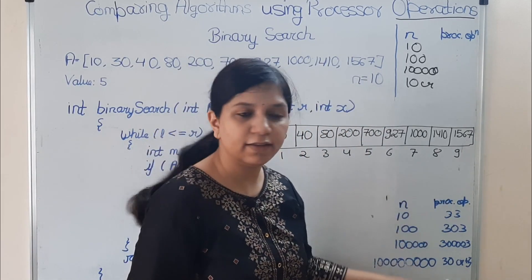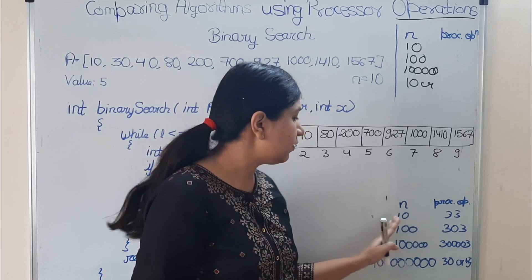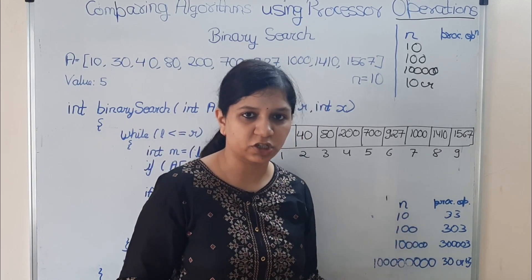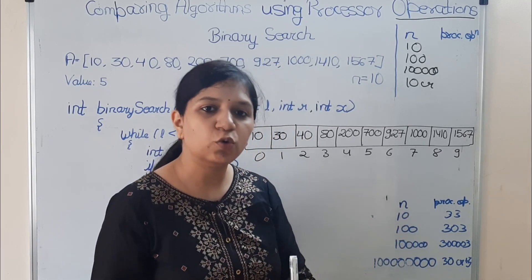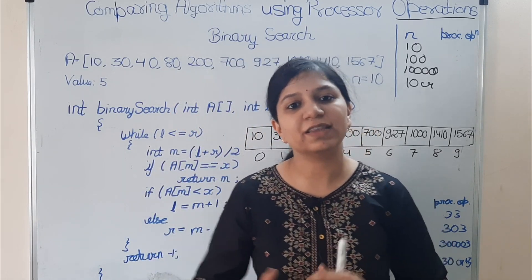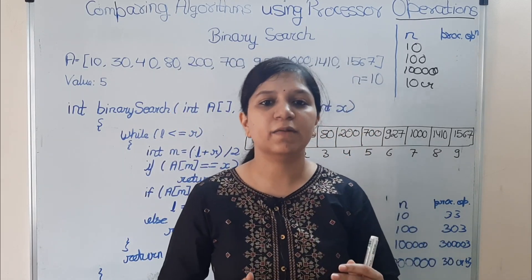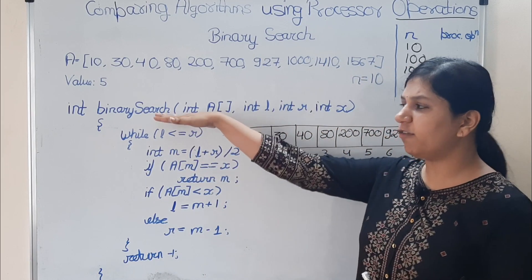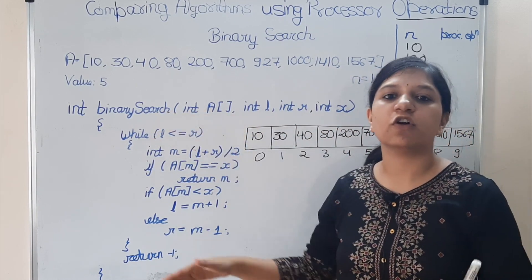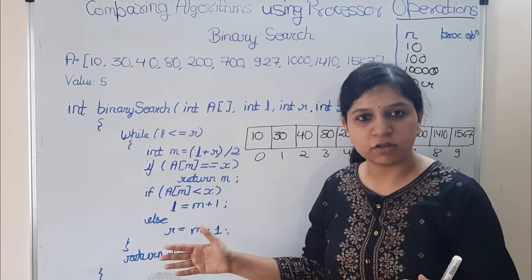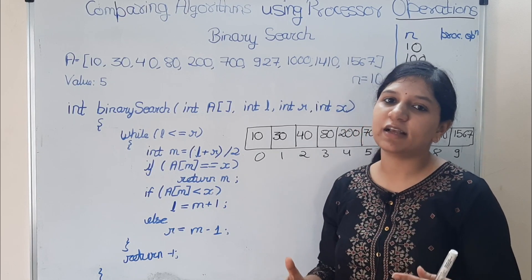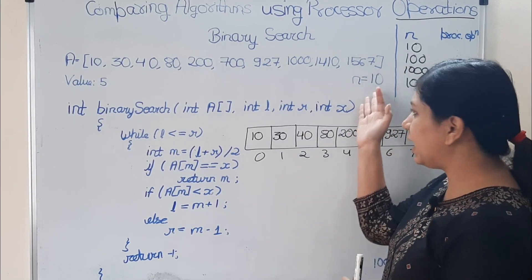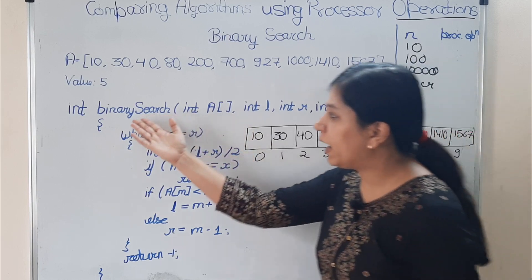Earlier when we did linear search, we created a table containing the input size and the number of processor operations. We'll now do the same with binary search and then compare both algorithms. We'll first talk about how the binary search algorithm works and then calculate the processor operations. Initially m is set to 10.